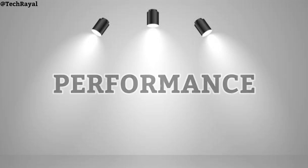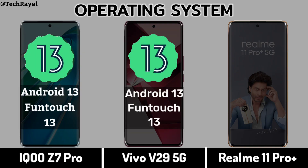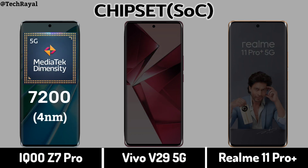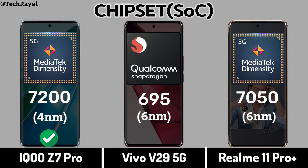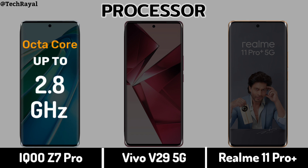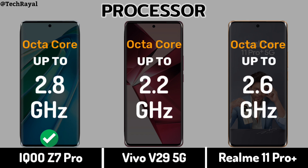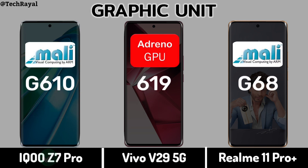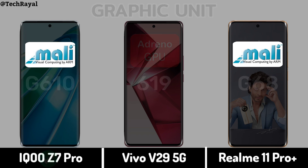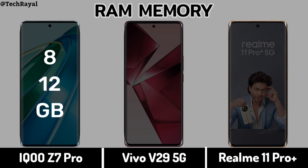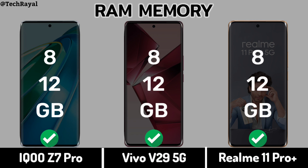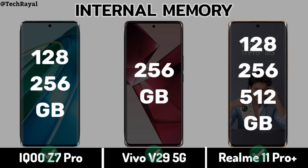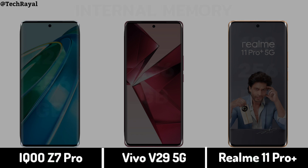Now for Performance: Operating System. Chipset. Processor. Graphic Unit. Now for Storage: RAM Memory. Internal Memory, Memory Card slot.